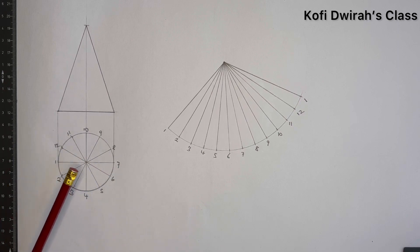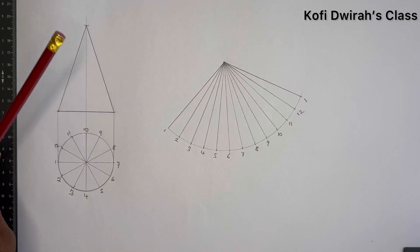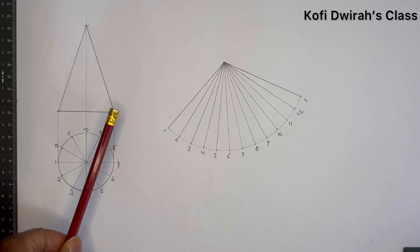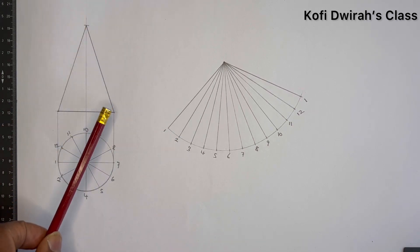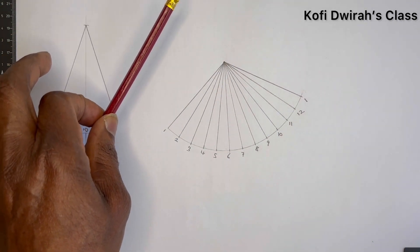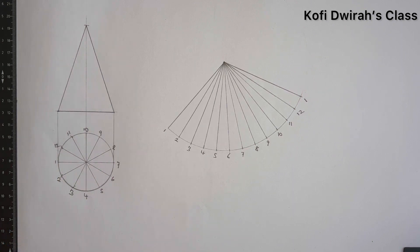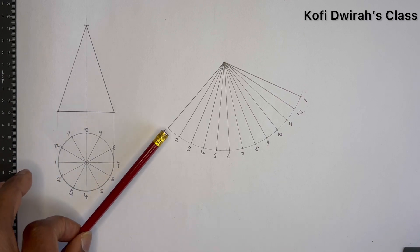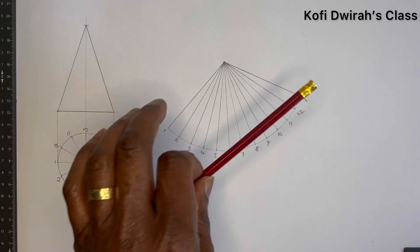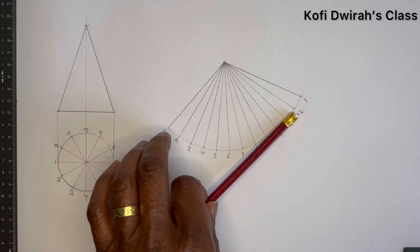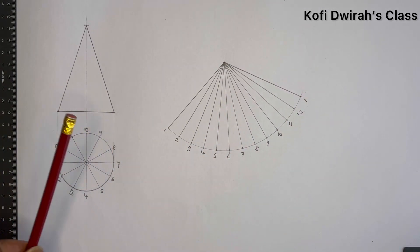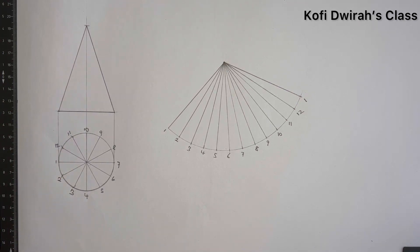You get your diameter, so with the radius you draw your circle. Then you have the height, so you extend the line and draw the height — that is the front view. With the slant distance as your radius, you draw an arc, measure one side, and mark 12 of those to get the development of the surface. This is how to develop a cone. Thank you very much for coming along. Please subscribe, share my videos with your mates, and I'll see you in my next class.